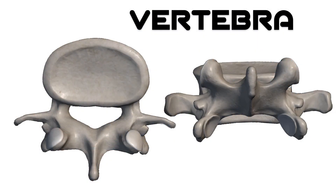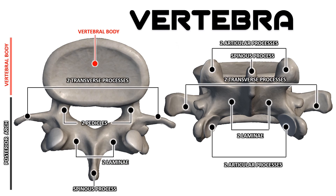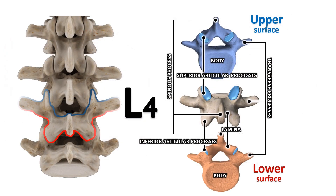Each vertebra consists of a vertebral body and arch. The arch is composed of two pedicles, two transverse processes, four articular processes — two superior and two inferior — and a spinous process.